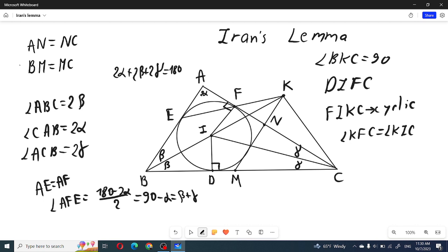So we have found all these angles. Now we need to find angle KIC. Angle KIC must be angle IBC plus angle ICB because this is an external angle of triangle BIC, which is the sum of two internal angles.